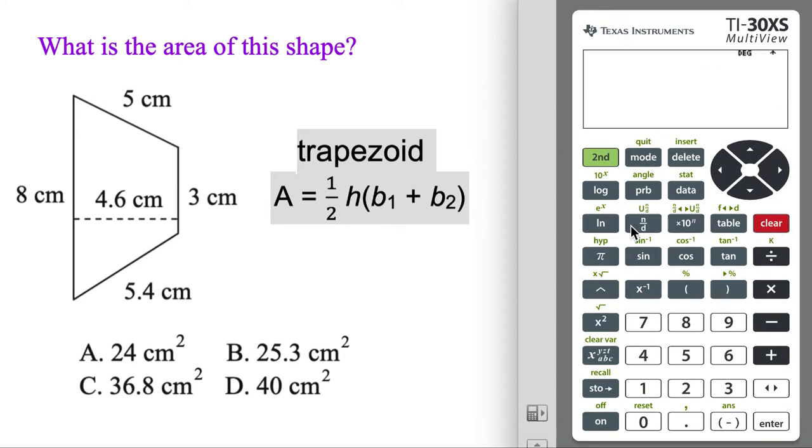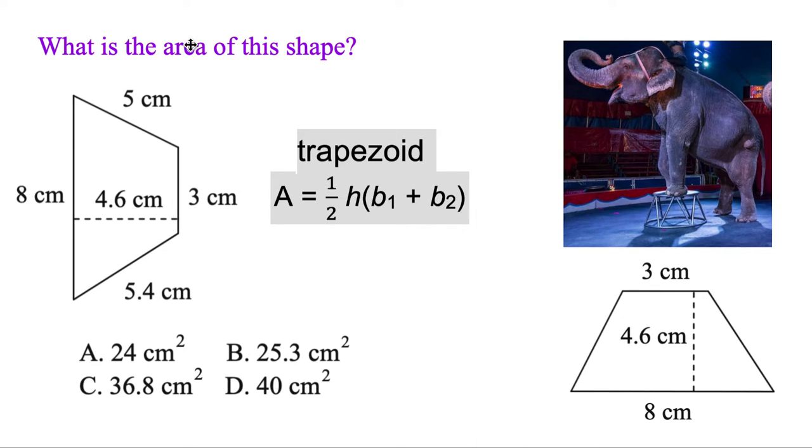Okay, let's clear. We'll start off with our 1 half times our height, 4.6. Then we're going to use a parenthesis, so we'll hit that guy. Our B1 was the bottom, 8, plus B2, the top, 3. Okay, drum roll, we get 25.3. Same thing as B there. So if it's sideways, flip it, and you'll be good.